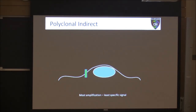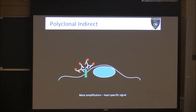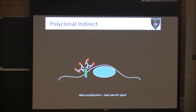Finally, a polyclonal indirect assay: we start with a polyclonal primary antibody recognizing multiple epitopes on our protein of interest, then come in with a polyclonal secondary — multiple secondary antibodies recognizing a single primary, all with fluorophores. This gives the most amplification but the least specific signal. This is what you need for a very low-expressing protein, but accept that you might be introducing less specificity, which can be a major problem depending on the quality of the polyclonal antibodies.